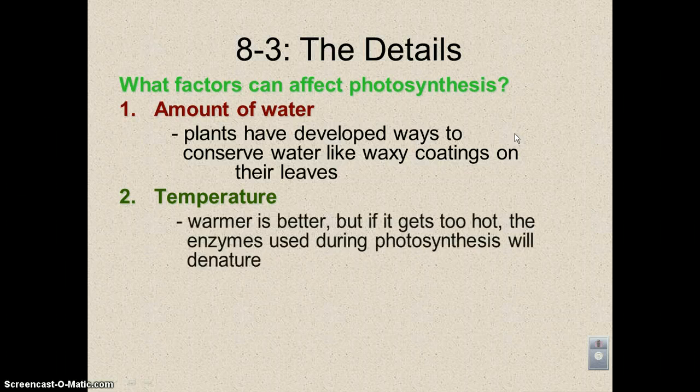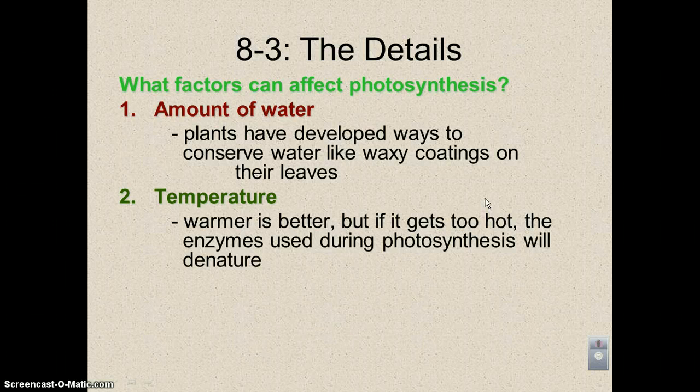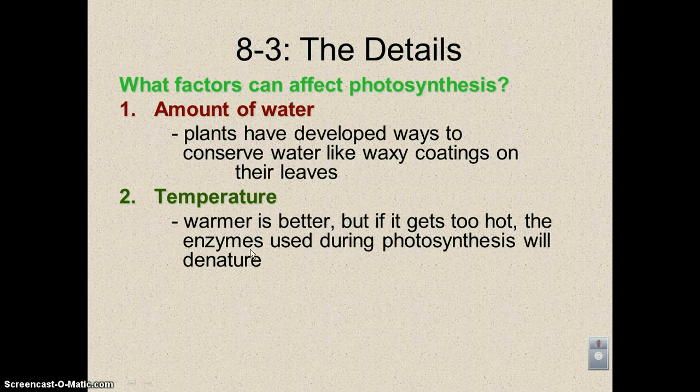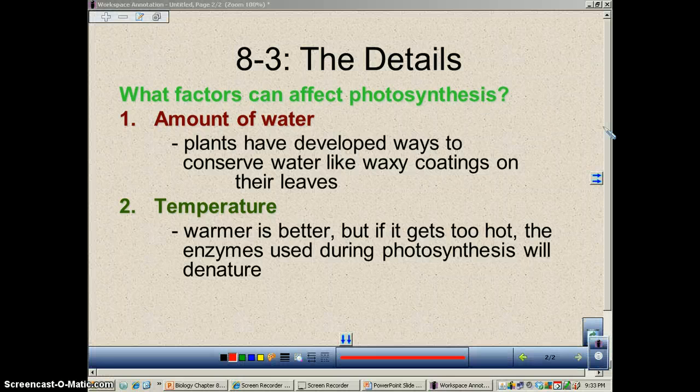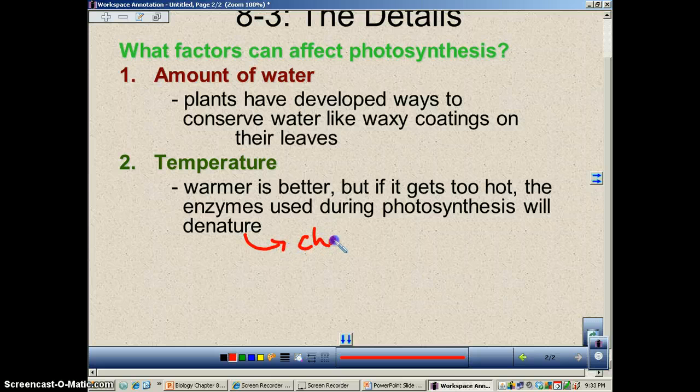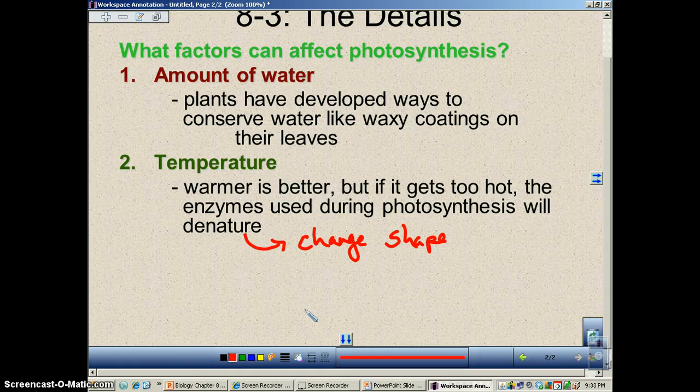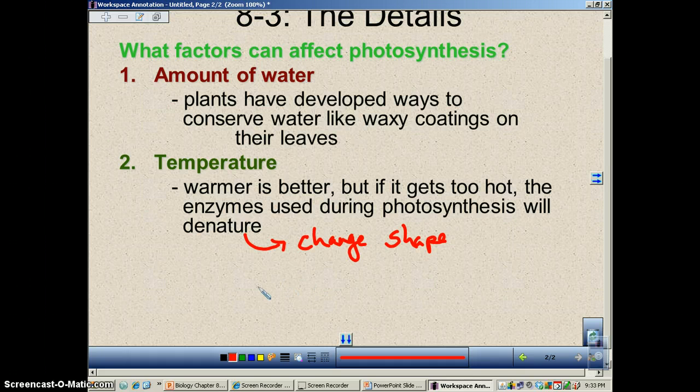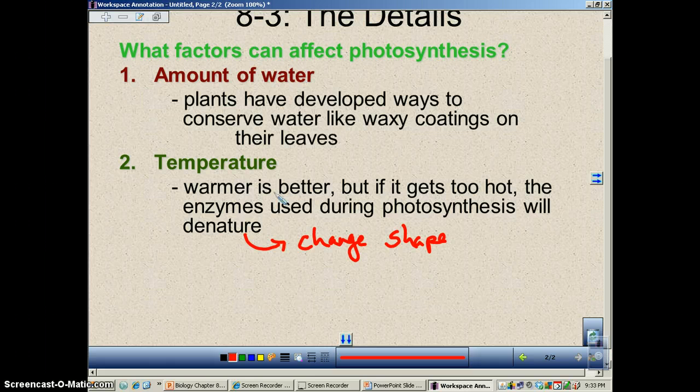All right, the next factor will be the temperature. Warmer is better, but you also have a point where if you get too hot, it will slow down the rate because the enzymes will denature. And so you've got to remember what the word denature means. And this happened back in Chapter 2 when we were talking about proteins and whatnot. Denature is a fancy word that means change shape. And so all of these enzymes that help control all the steps in the light-dependent reaction and in the Calvin cycle, these enzymes are made out of protein, and once you reach a certain temperature, these proteins will change shape or denature, and that will stop it. All right, so warmer is always better, but once you reach the point where it gets too hot, it will stop.